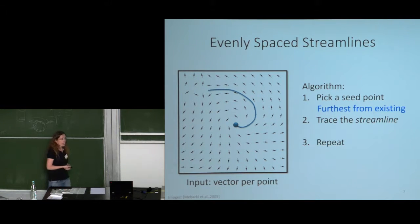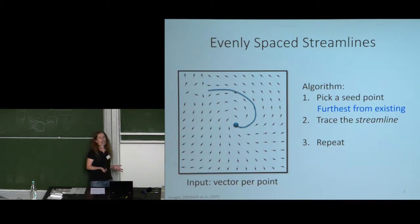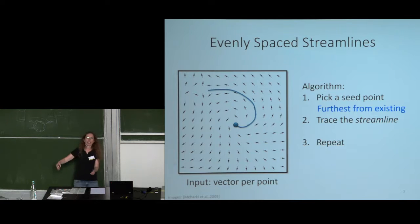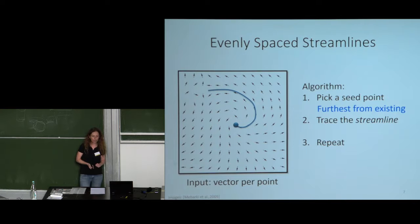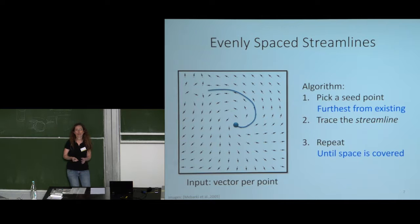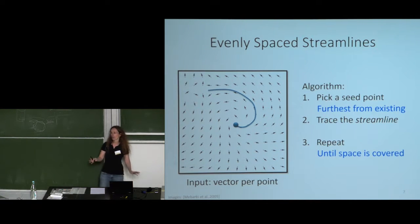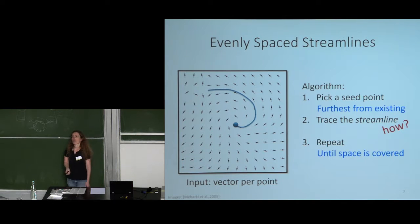One popular seeding strategy: pick the seed point that is farthest from all existing streamlines. You randomly pick one seed point, trace the curve until you exit the domain, then pick another seed point that is furthest away from all existing curves. Repeat this process until all spaces are covered. If a new candidate point is closer to all existing streamlines than some specified minimum distance, you stop.